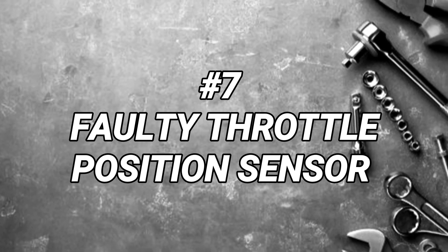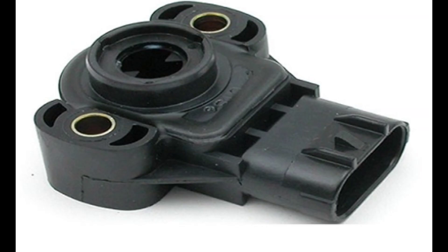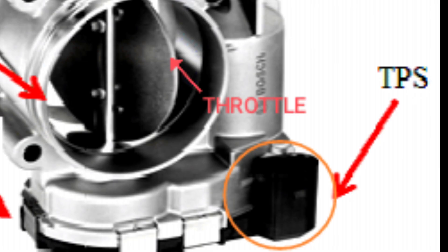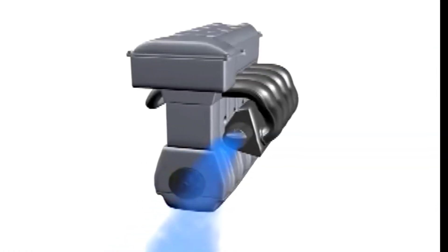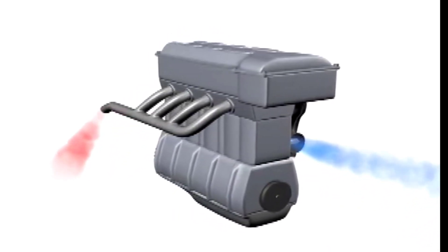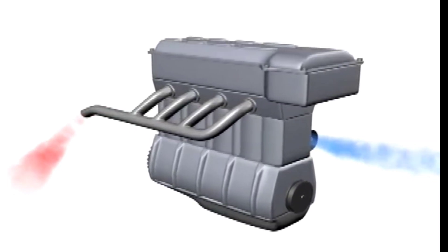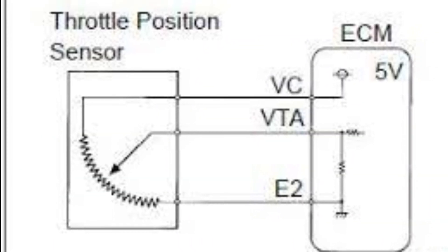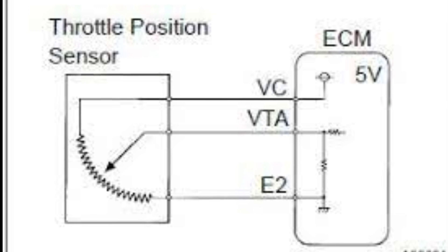Faulty throttle position sensor. A faulty throttle position sensor can cause the check engine light to turn on, because it can drastically affect the engine's performance and emissions. The throttle position sensor, or TPS, is responsible for sending a signal to the engine control module about the position of the throttle, allowing the ECM to adjust the air-fuel mixture and ignition timing accordingly. If the TPS is faulty, dirty, or sending an incorrect signal, it can cause the engine to run poorly, affecting acceleration, idle speed, and fuel economy, and also causing emissions to exceed allowable limits. As a result, the ECM will typically detect a fault in the TPS and trigger the check engine light.